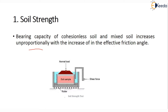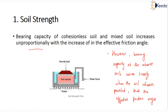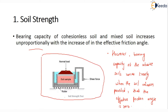The bearing capacity of cohesive soils varies linearly with the soil cohesion, provided that the effective friction angle is zero. This is an important point to remember. This is the soil strength test which is normally done.